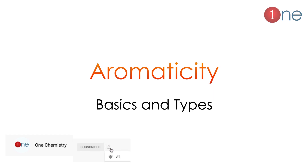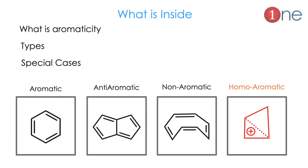Now let us see about aromaticity. Aromaticity is a basic concept in organic chemistry. We will learn the basics and types. Stay tuned for complete information. First, let's see what is aromaticity, its types, and some special cases. The types are aromatic, anti-aromatic, non-aromatic, and homo-aromatic. We will see them one by one in detail.